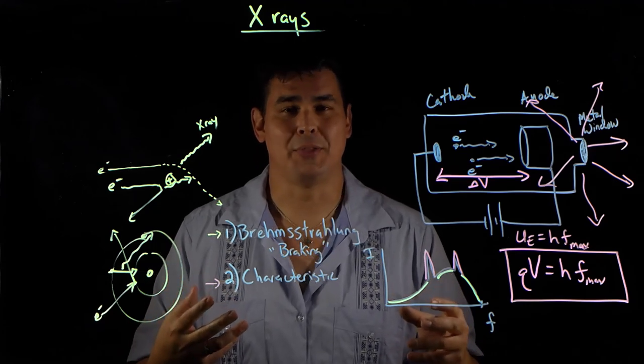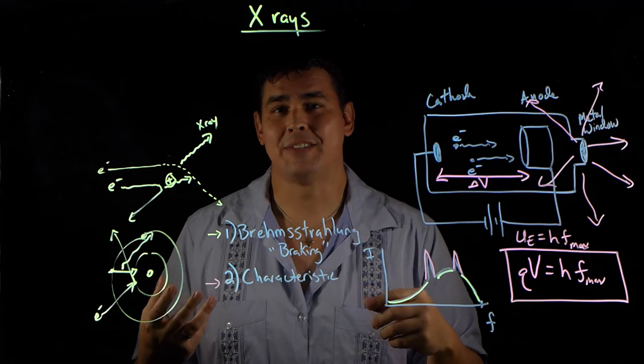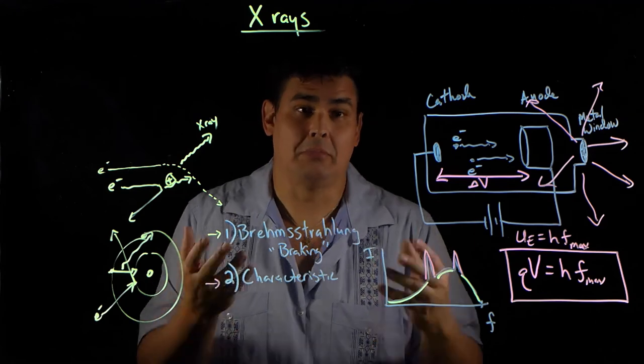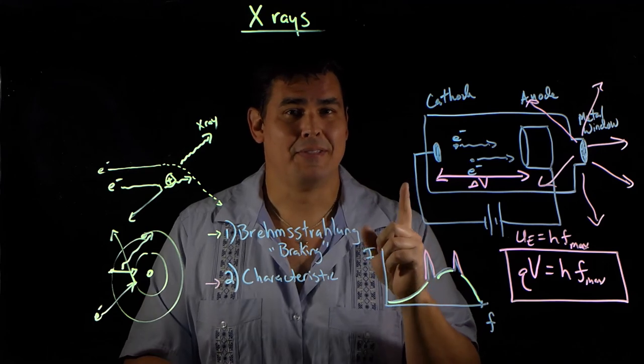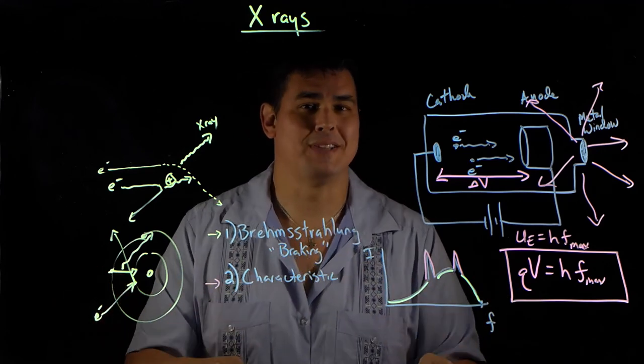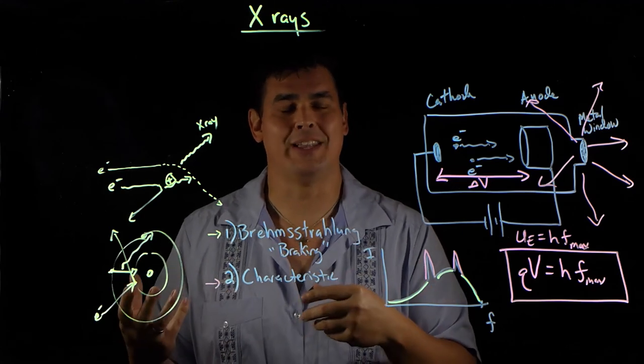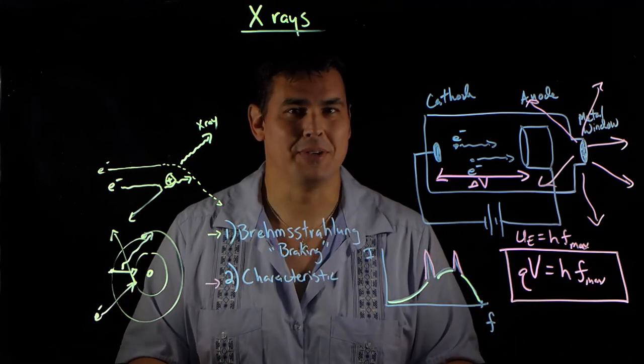So Röntgen died in 1923. And interestingly enough, when he did die, in his will, he wanted all of his scientific papers to be destroyed. I don't know why. But he saved the papers that Lenard had sent him. Destroyed everything except for the correspondences with Lenard. Because I think he knew that Lenard wasn't happy with this and he was going to try to get him erased from the history books.